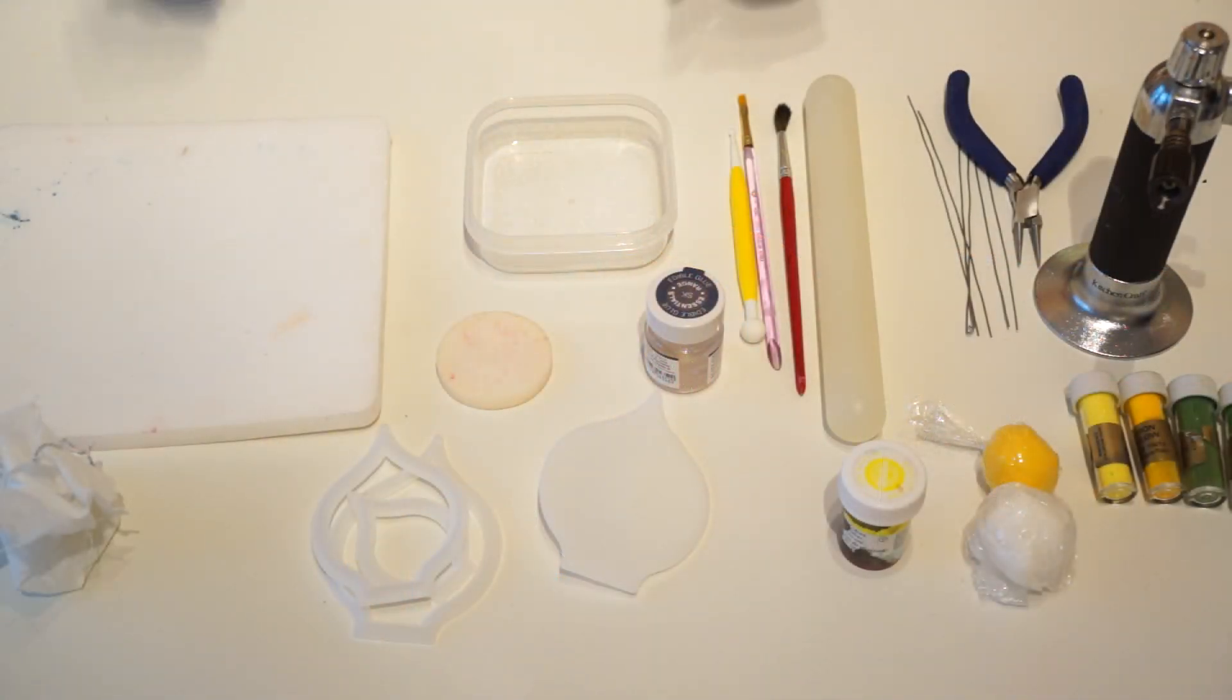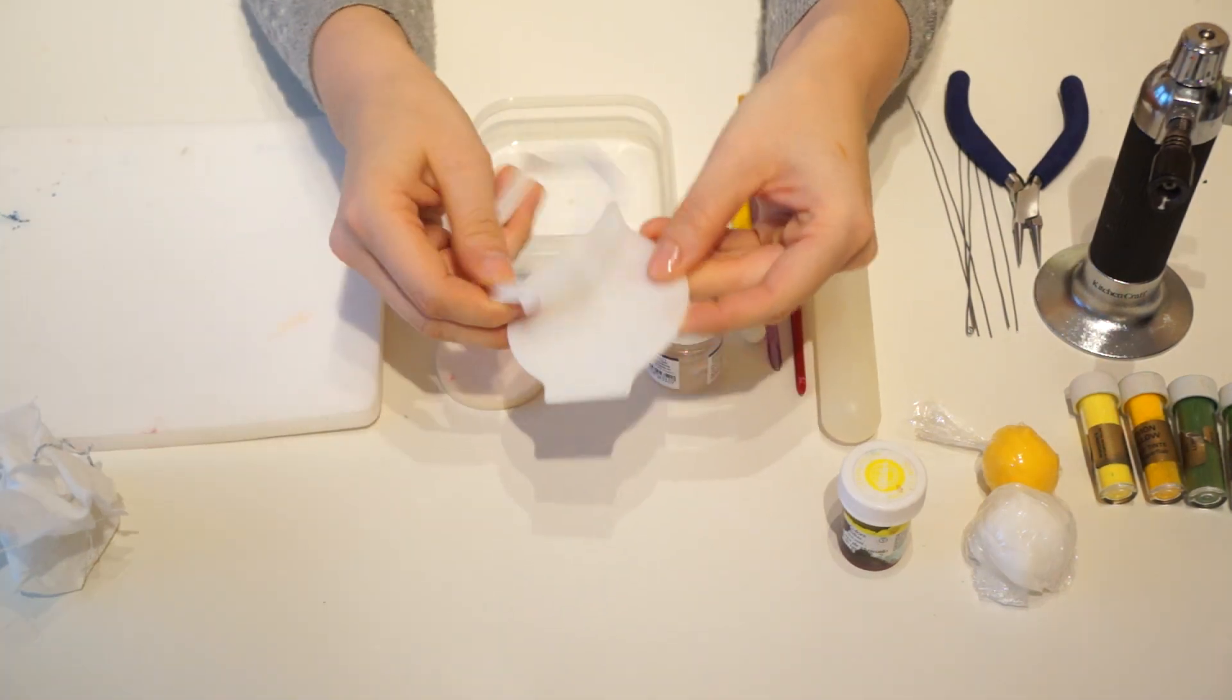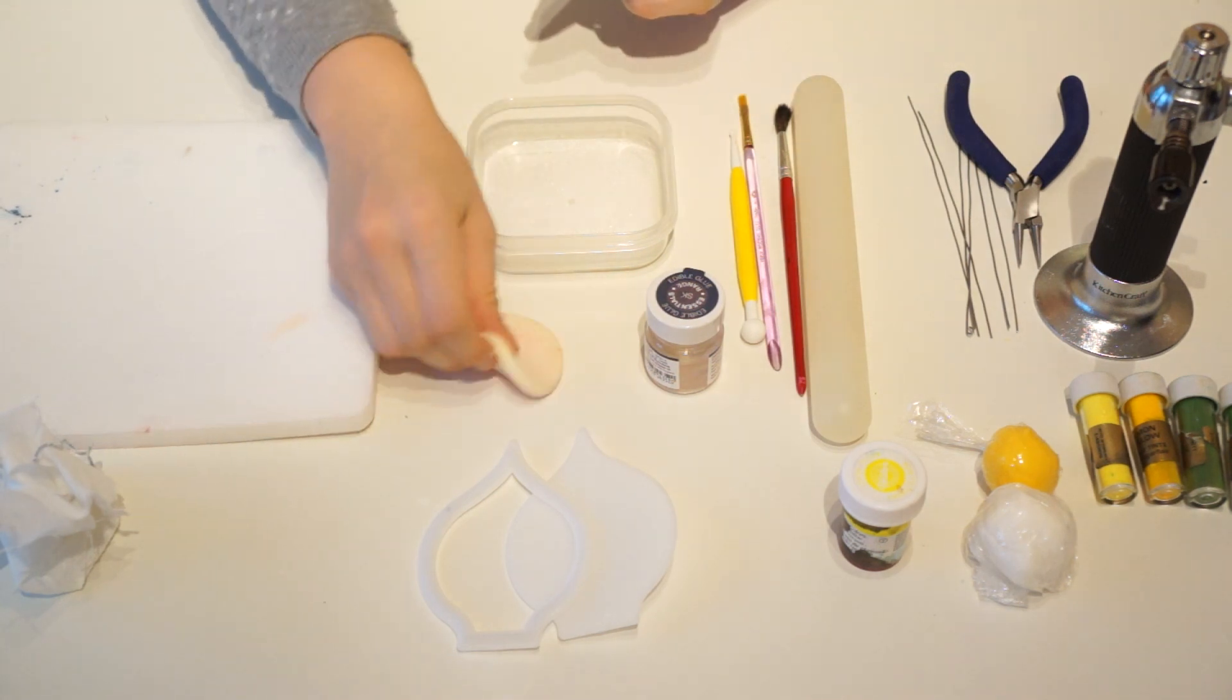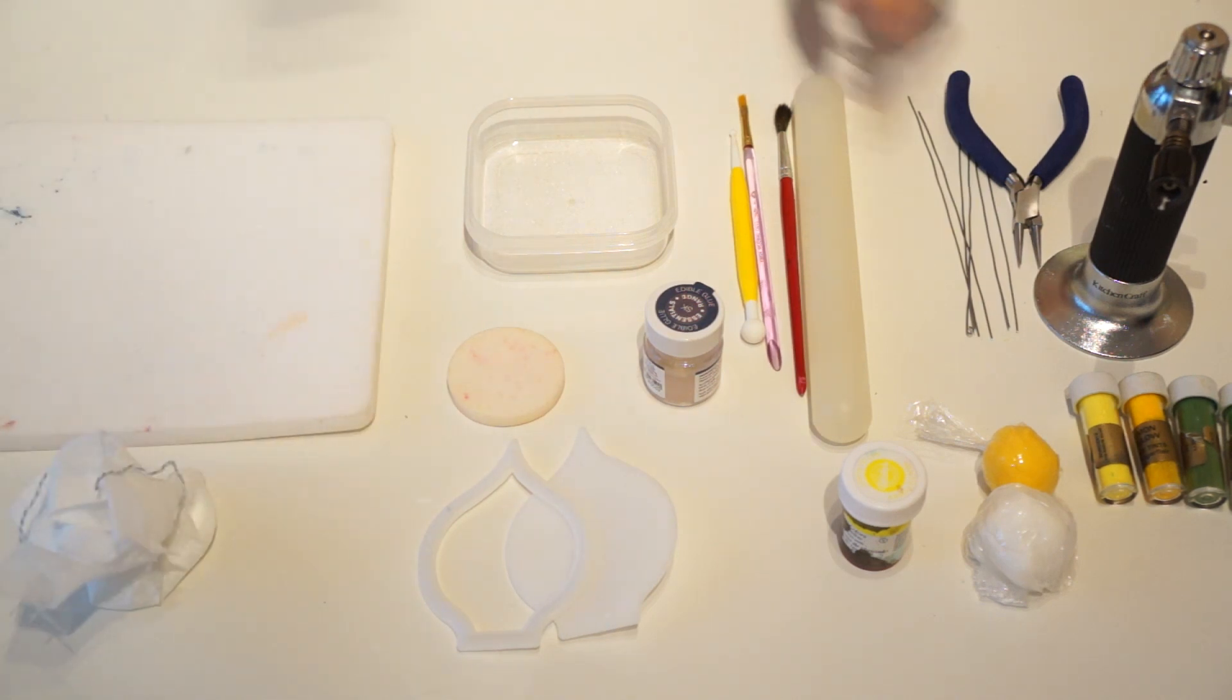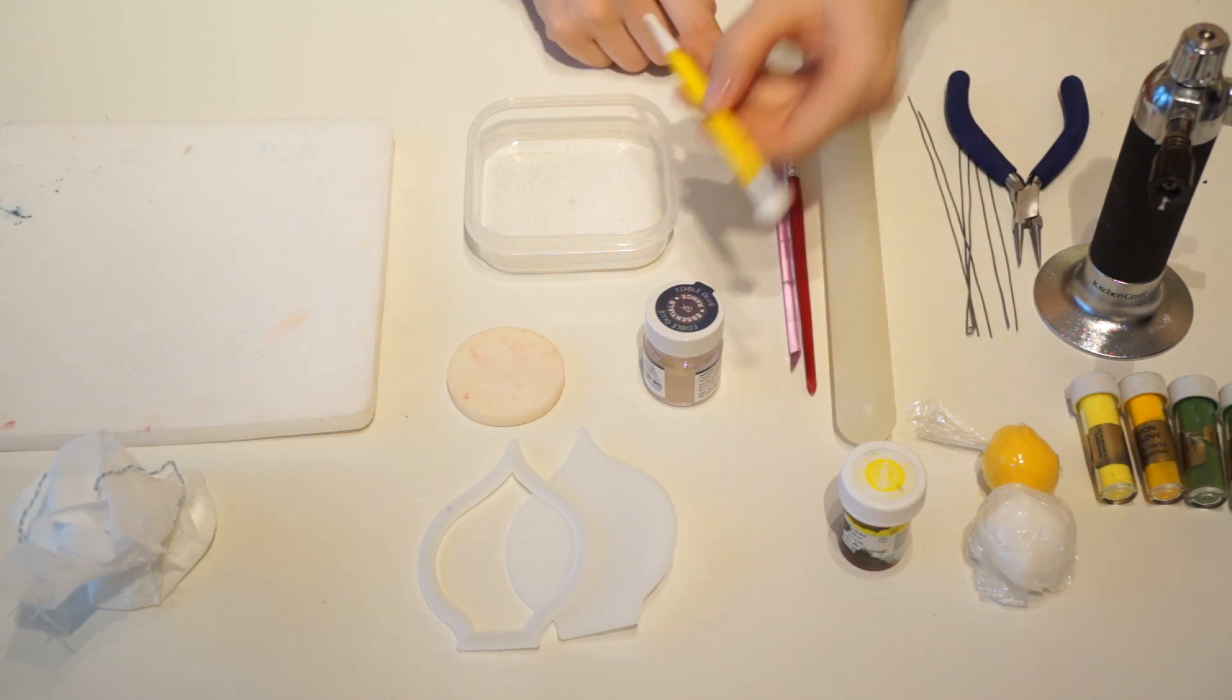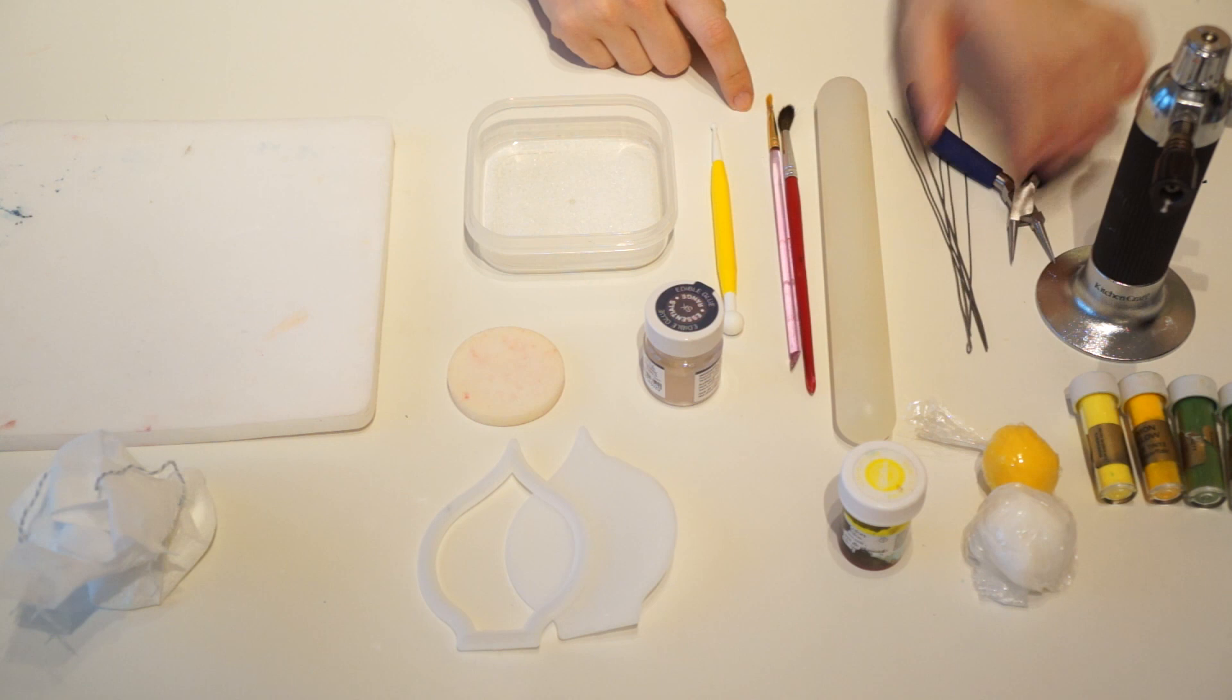To make your calla lilies, we're going to need some cutters. I've also got a veiner that came in the same set, so I'm going to use those. I've got a little sponge to use with the veiner, some edible glue, my foam mat, some cornflour, my rolling pin, some paintbrushes and my ball tool.